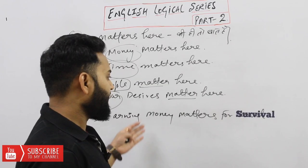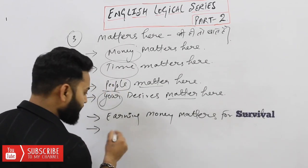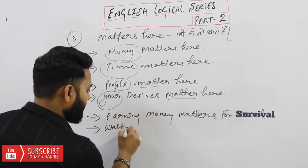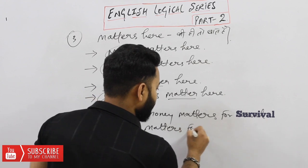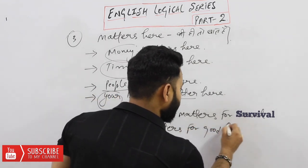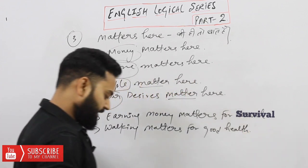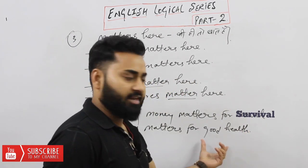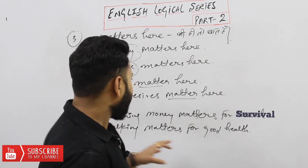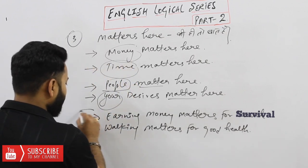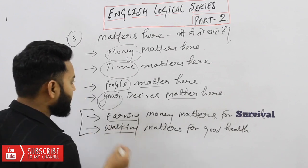For example: 'Earning money matters for survival' — it means earning money is very important for survival. Another example: 'Walking matters for good health' — meaning walking is very important for good health. In these cases we have used a verb form as the subject, which behaves as singular, so we used 'matters.'